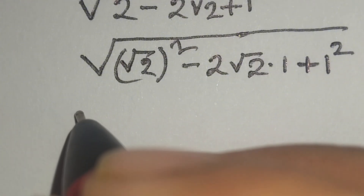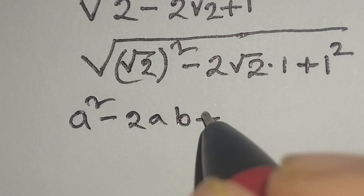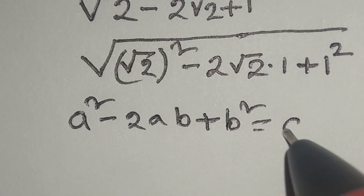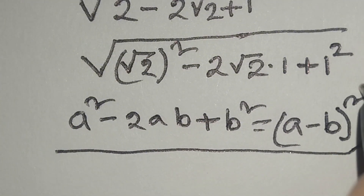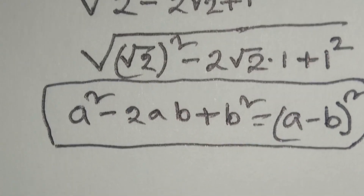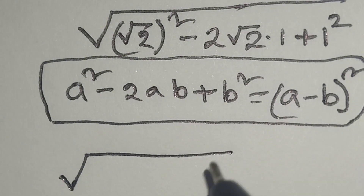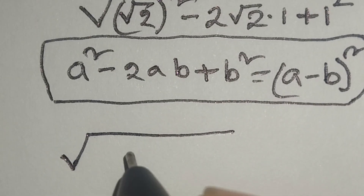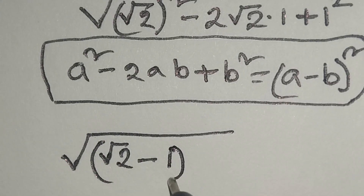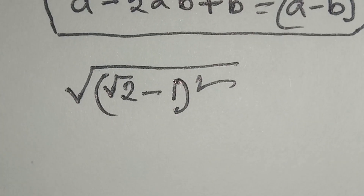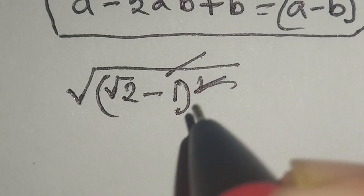Here we know that a squared minus 2ab plus b squared is equal to (a minus b) whole square. According to this formula, we can write this as square root of (square root of 2 minus 1) whole square. This square root and the square cancel each other.